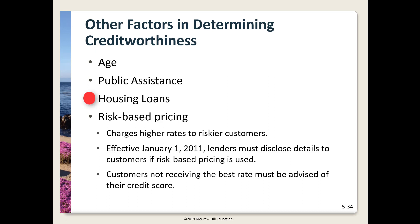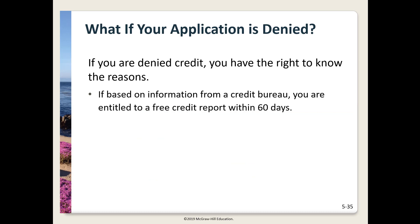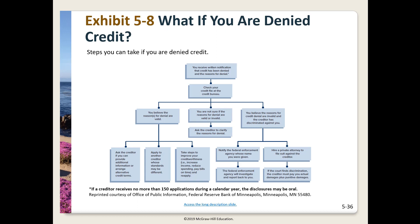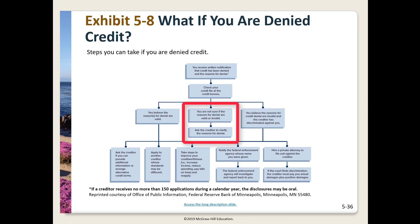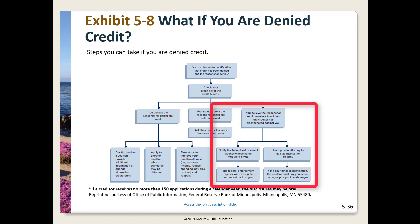The ECOA bans discrimination based on race or nationality regarding mortgages or home improvement loans — this is called redlining. Risk-based pricing: a lender using risk-based pricing to charge higher rates to less creditworthy borrowers must disclose this and explain why you're not getting the best rate. The ECOA requires that if you're denied credit, you must be told the reason why. If the denial is based on your credit report, you have the right to be told your credit score and to receive a free report within 60 days. If the reason for denial is valid, ask about alternatives, apply to another lender, or improve your score. If you believe the reasons are invalid or discriminatory, you can file suit.